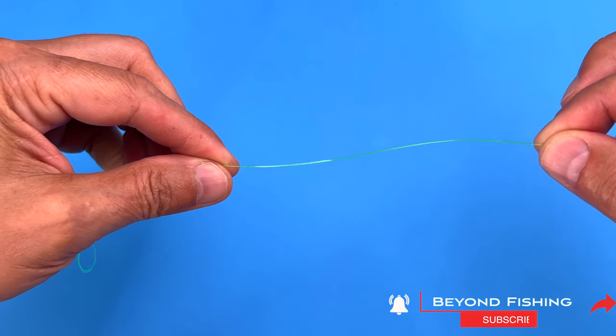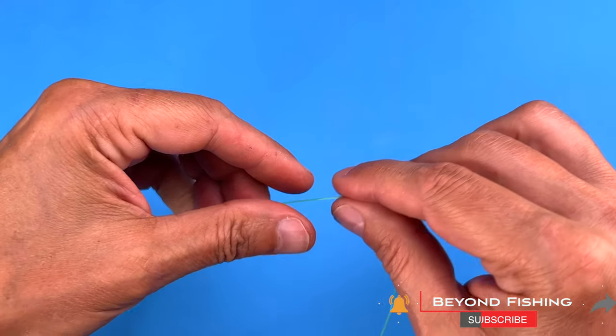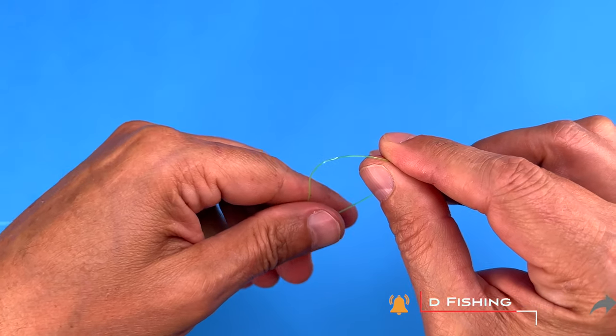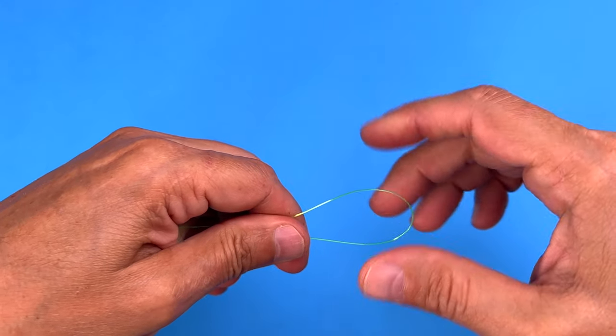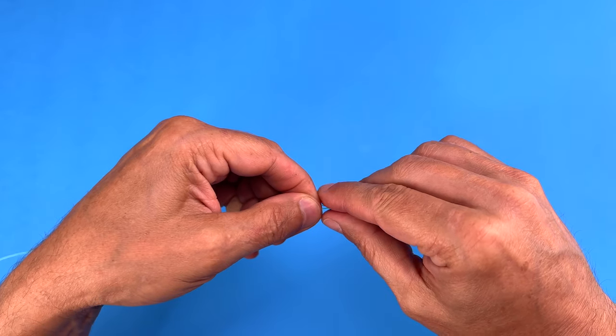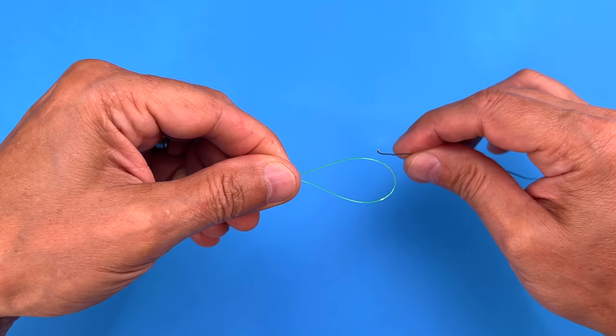I'm going to create an Alberto knot for you today. As you can see, I have my lead here. I'm going to make a loop with it. This is a 15-pound lead, so it's pretty thin, but you want to create a loop with it just like this.